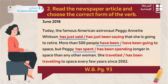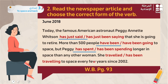'She traveled / has been traveling to space every few years since 2002.' The keyword 'since' cannot go with past simple. Since 2002 she has been traveling to space every few years — this is an ongoing repeated action that started in the past and continues. That's why we use the present perfect continuous: 'has been traveling.'